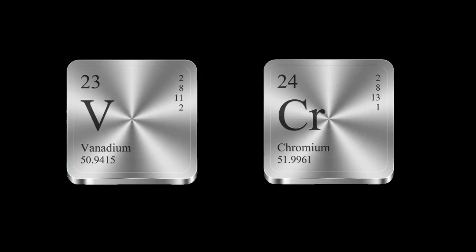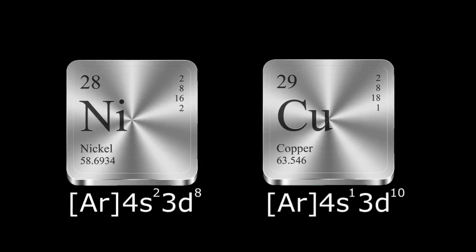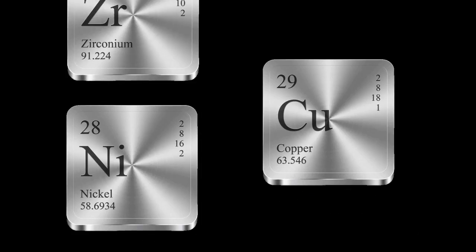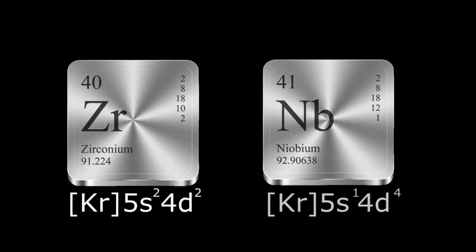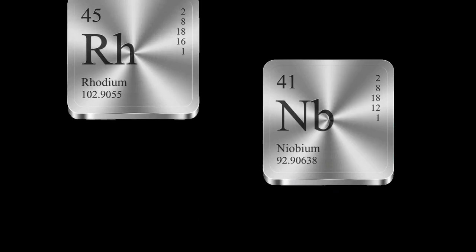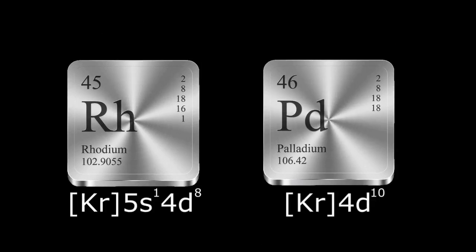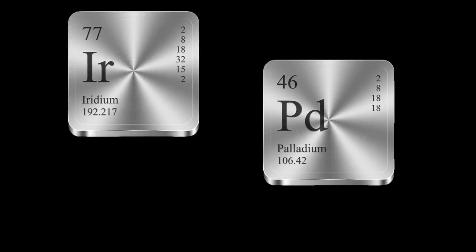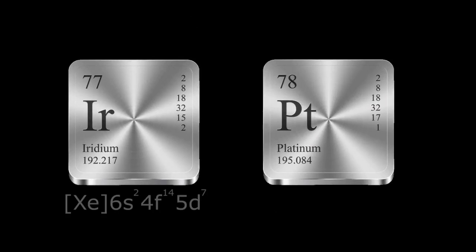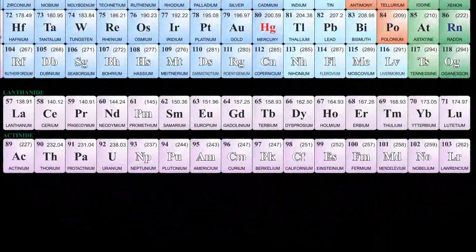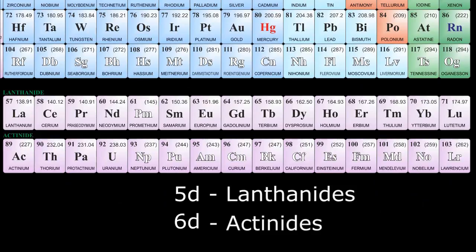Other exceptions occur between nickel and copper, zirconium and niobium, rhodium and palladium, as well as iridium and platinum. Finally, at the bottom of the periodic table with the rare earth lanthanides and radioactive actinides, the 5D and 6D subshells respectively seem to randomly appear and disappear like little subshell ghosts throughout the series. Otherwise, the Aufbau principle is pretty solid.